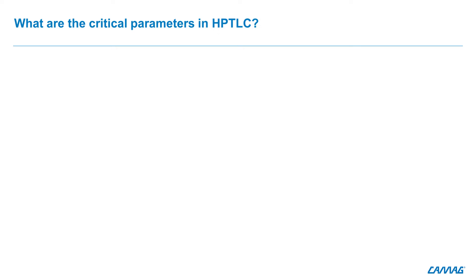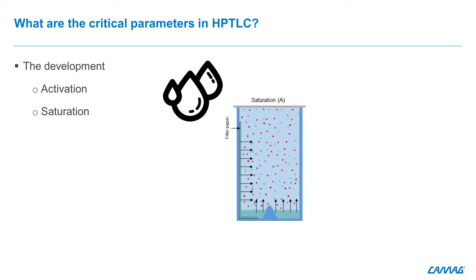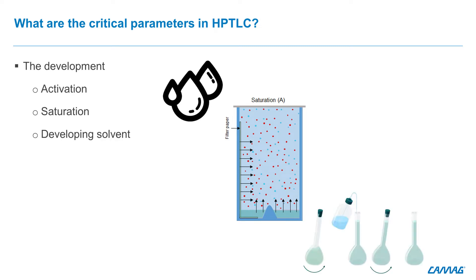Besides the plate, during the development, many parameters are influencing elution. Inside the chamber, the relative humidity of the air and the degree of saturation of the chamber will have an influence on the RF value. Another important parameter is the developing solvent. Depending on whether the developing solvent is prepared properly or not, the RF value will be compliant.